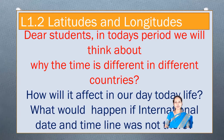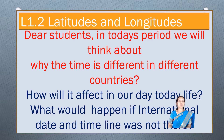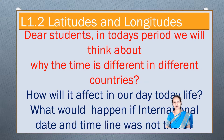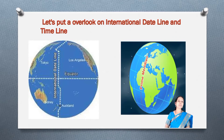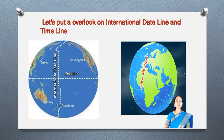Dear students, in today's period we will think about why the time is different in different countries and how it will affect our day-to-day life. What would happen if the international date and timeline was not there? Let's look at the international date line and timeline. We have two different images here — one symbolizes the prime meridian, also called the timeline, and the other image shows the international date line.